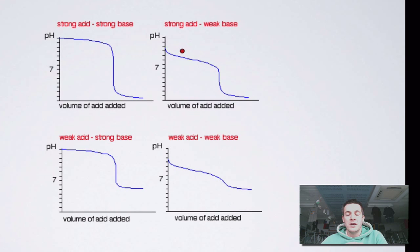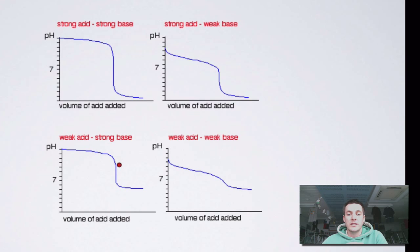Looking at this titration curve, this is what we might expect to see if we were adding a strong acid to a weak base. We're ending up at a very low pH, but our starting pH is not as high — about 9 or 10 because we've got a weak base in our flask. Another combination is the weak acid reacting with the strong base — still starting near pH 14, dropping very little until the sudden change, then levelling off at the weak acid pH of about 4 or 5. So there are three different kinds of titration curve depending on which acid and base we've used.